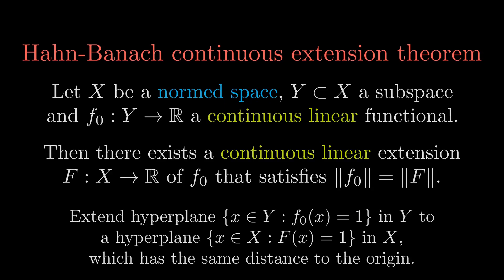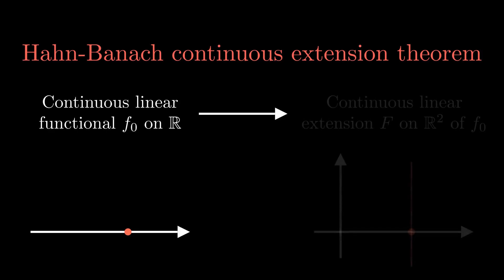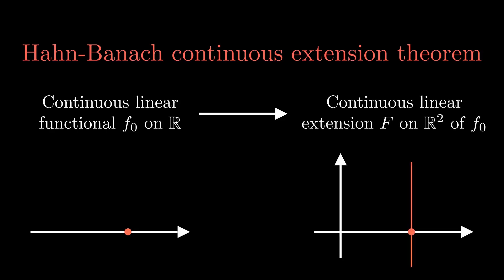For example, a continuous linear functional on R has a single point as the hyperplane. Then we can extend this point to a line in a two-dimensional space without changing the distance to the origin. This corresponds to extending the continuous linear functional on R to a continuous linear functional on R^2 without changing the norm. Similarly, you can extend a line in R^2 to a plane in R^3.